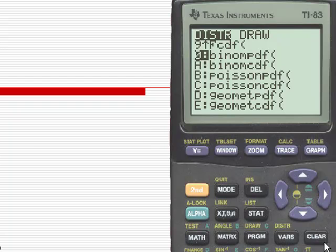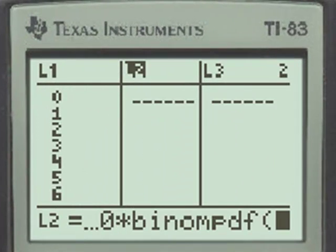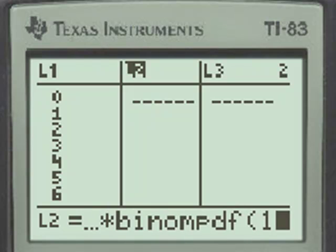So select 0, and now the syntax for the Binomial Probability Density function is that we will first put in the number of problems on the test, which was 10. Next,